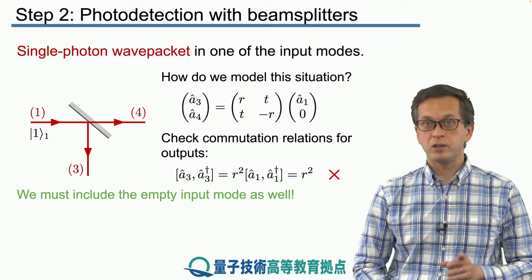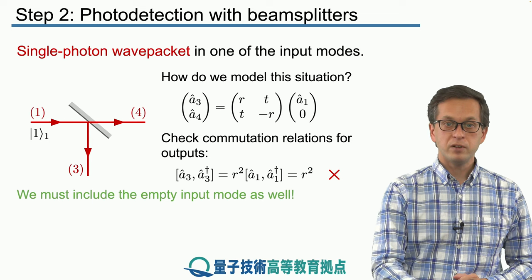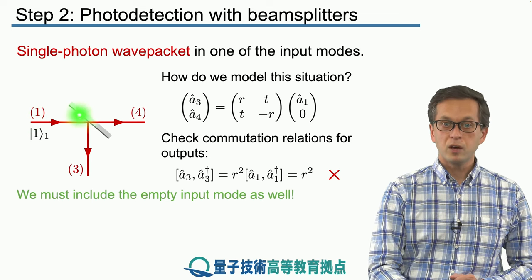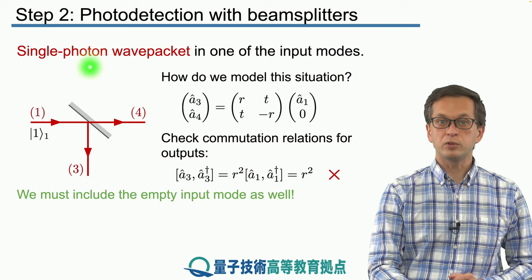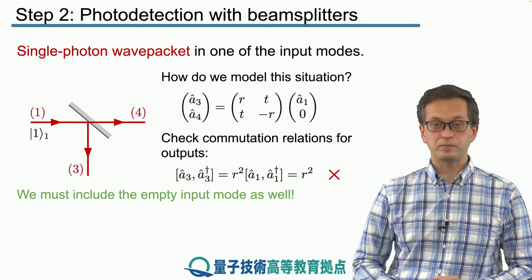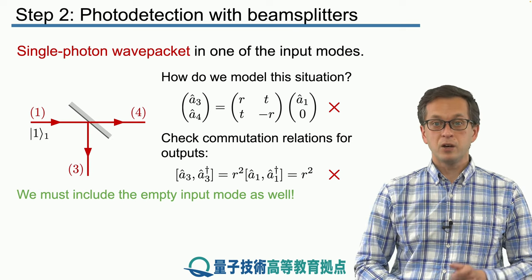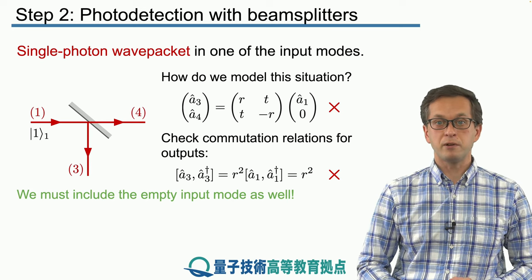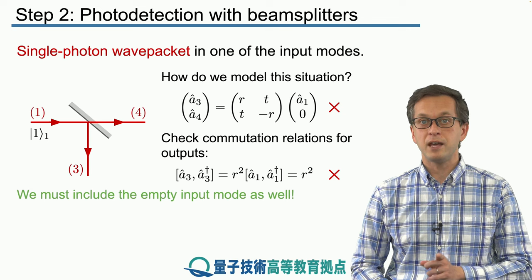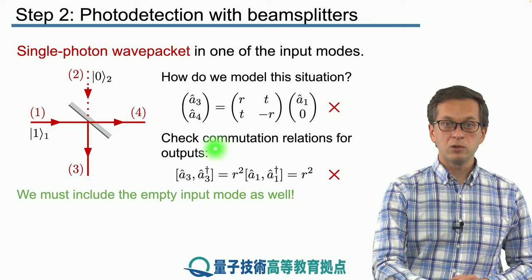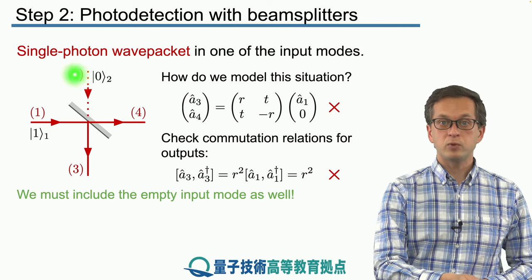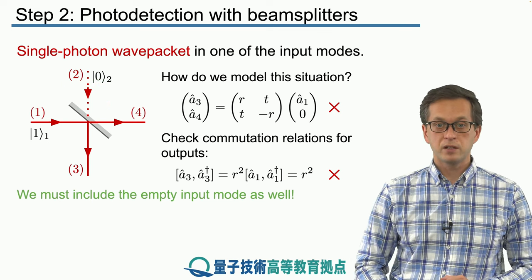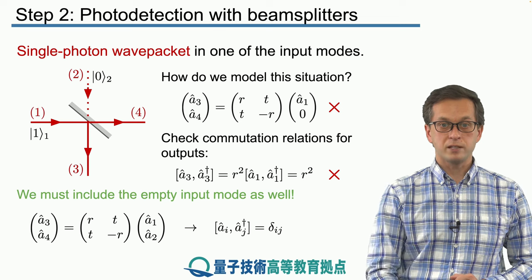In quantum mechanics, vacuum plays a role. So even if we have a single photon at input 1, we still need to model input 2. How do we do that? We have to rewrite our transformation relations for A3 and A4 in terms of A1 and A2. We include the input mode 2 and we set it to state 0, meaning the vacuum.